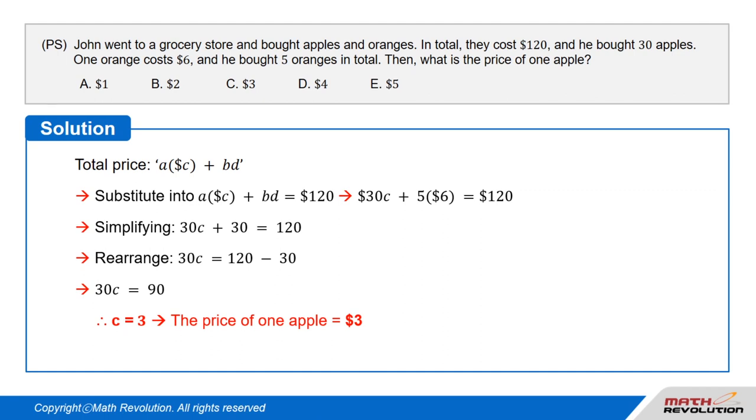So, the price of one apple is $3, and C is the correct answer. You should remember how to use separated 2 by 2. It will prove to be extremely helpful when you're writing the actual test.